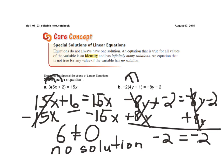Again, we have no variable terms. The variable terms eliminated. But this time, I'm left with a true statement. Negative 2 does equal negative 2. This represents an identity. This equation has what we call infinitely many solutions.